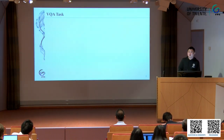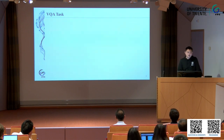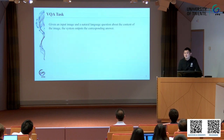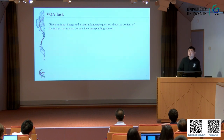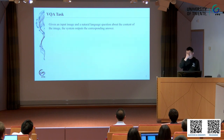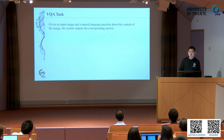What is this dataset created for? It's for a VQA task. So what is VQA? It's a recently emerged task in the domain of computer vision. Given an input image and a natural language question about the content of the image, the system needs to output a natural language answer to this image-and-question pair.